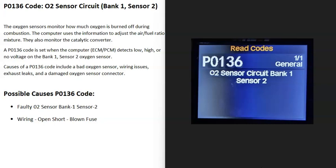Today I'm talking about a P0136 code, what it is, and how you go about fixing it. So what is a P0136 code? It's an O2 sensor circuit Bank 1, Sensor 2.